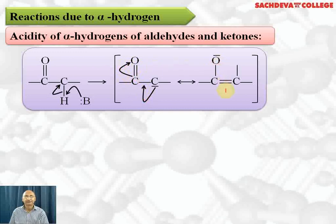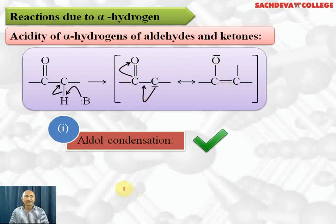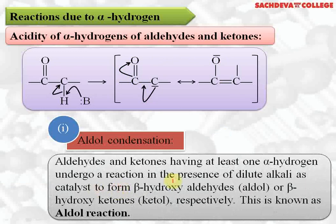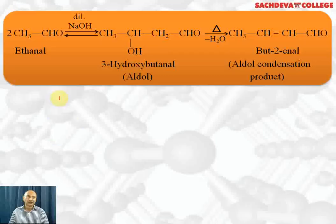The first most important reaction based on alpha hydrogen is aldol condensation. Aldehydes and ketones that have alpha hydrogen undergo this reaction in the presence of dilute alkali as a catalyst to form beta-hydroxy aldehydes, also called aldols — because they contain both an aldehyde group and an alcoholic group — or beta-hydroxy ketones, also called ketols.